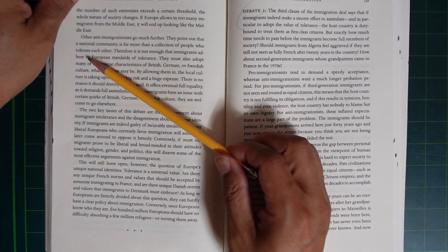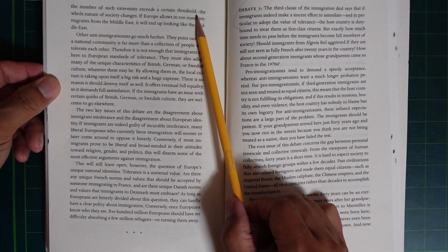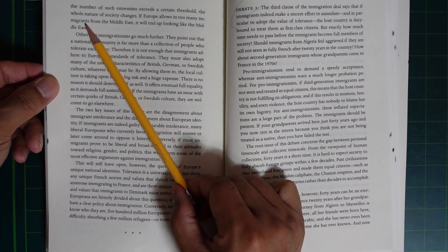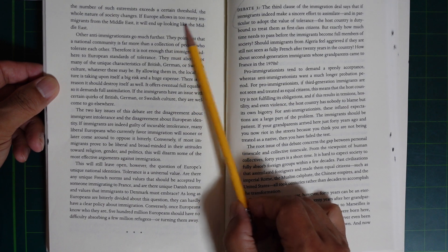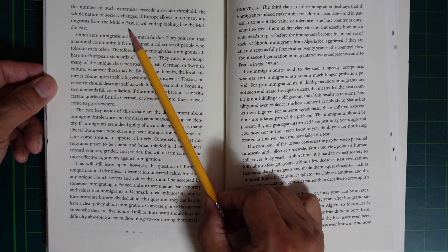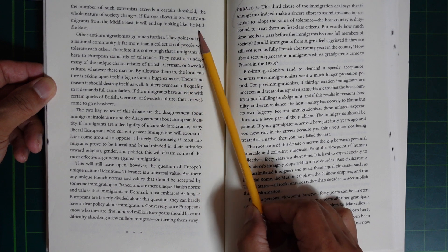If the number of extremists exceeds a certain threshold, the whole nature of society changes. If Europe allows too many immigrants from the Middle East, it will end up looking like the Middle East.